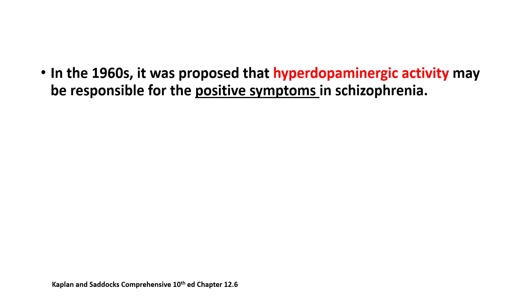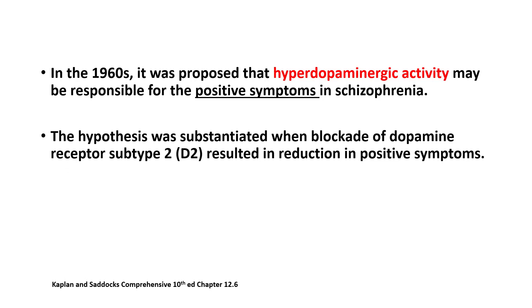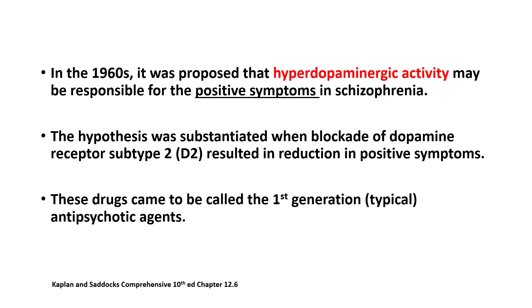Moving into pathophysiological concepts in schizophrenia: in the 1960s, a hypothesis was put forward stating that positive symptoms in schizophrenia were due to hyperDopaminergic activity in the brain. When dopamine receptors in the brain were blocked, positive symptoms reduced. So the first antipsychotic drugs that entered the market were D2 receptor blockers, which reduce positive symptoms by acting in the mesolimbic pathway.